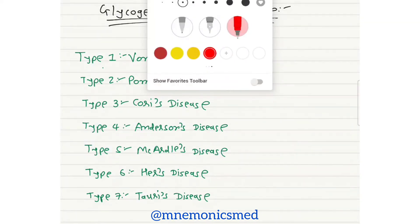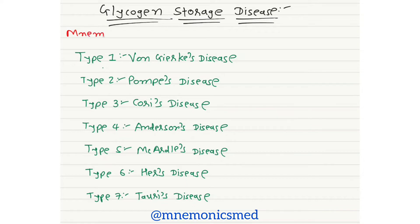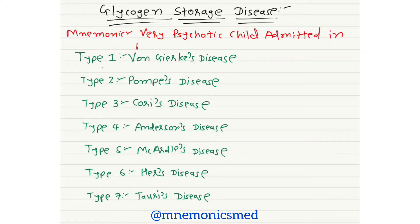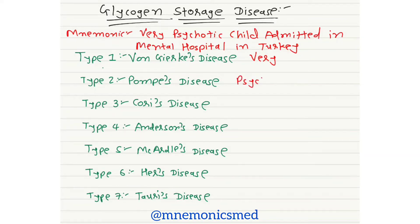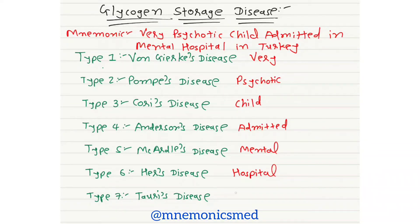Type 7 Glycogen Storage Disease is Tarui's disease. Now don't worry, I am giving you a mnemonic to remember this complicated table. The mnemonic is: 'Very Psychotic Child Admitted In Mental Hospital In Turkey.' This covers all types 1 through 7.